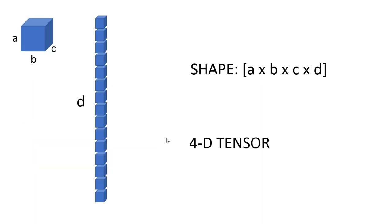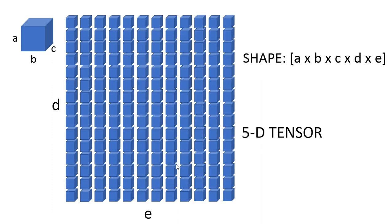Let's take another example — this is an array of cubes. It is a four-dimensional array: the three dimensions of a cube and one dimension of the array, so in total it is a 4D array of shape A by B by C by D — we call it a 4D tensor. This next one is a matrix of cubes, a 5D array with the three dimensions of one cube and two dimensions of a matrix, so we call it a 5D tensor.